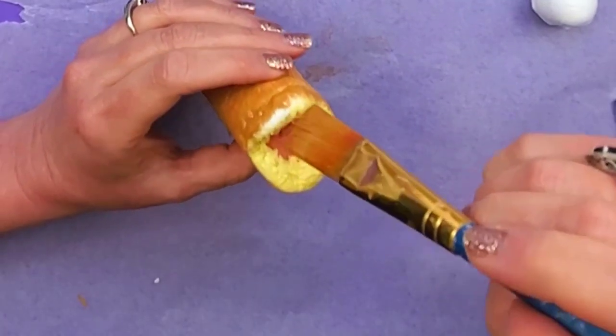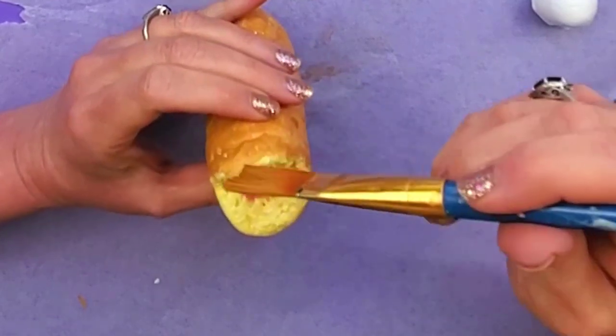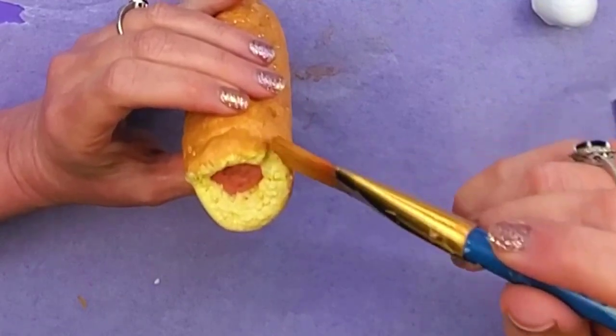And then around the edge here, we want to just get along that line there. We want a little bit of the brown showing on the top.